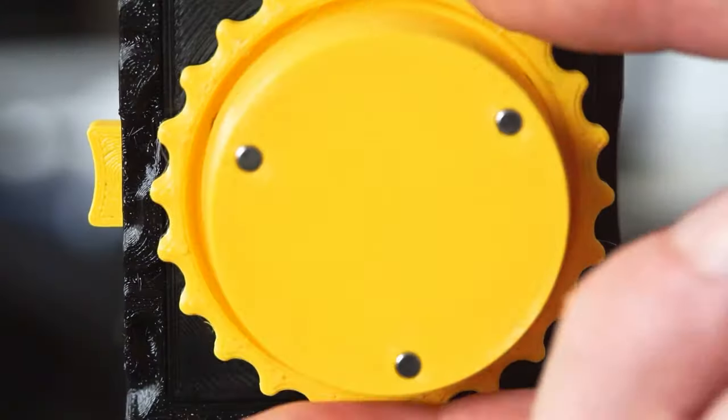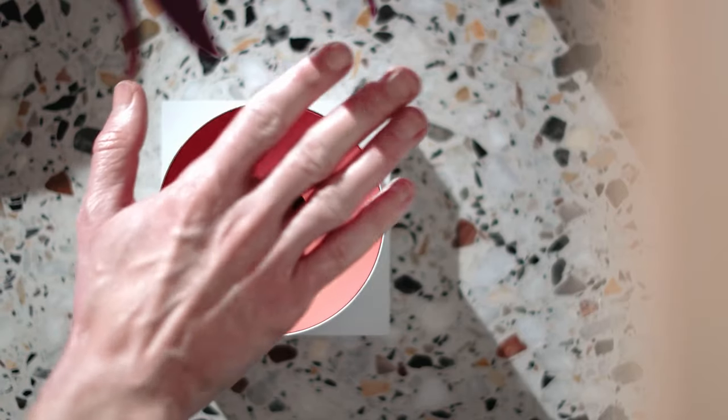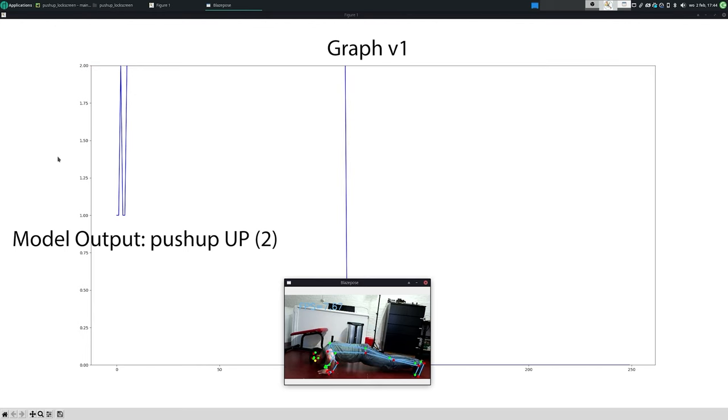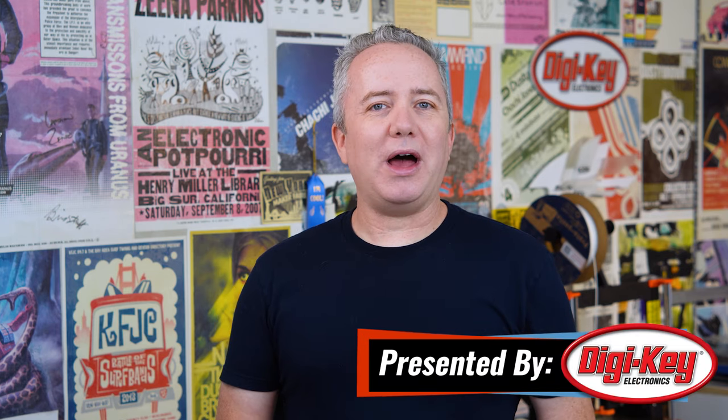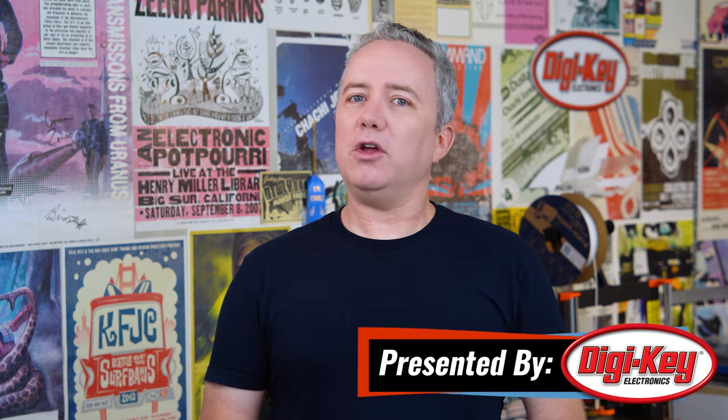This week on Maker Update, a DIY digital camera that's made to be played with, Google's little signals, dismantling cookies for science, and unlocking your computer with push-ups. Hey, I'm Donald Bell and welcome back to another Maker Update. I hope you're all doing well and pushing forward with whatever you're working on. If you could use some inspiration though, you've come to the right place. Let's get started with the project of the week.